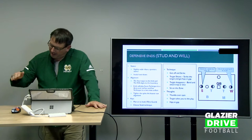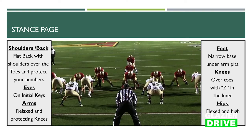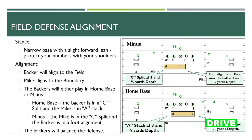With our defensive line, we want our tail higher than our head and we reach out with our hands — we have a whole defensive line segment that will cover this in detail. In our linebacker stance, we want our back flat, shoulders over our toes protecting our numbers, eyes on our initial key, arms relaxed protecting our knees, and a narrow base with our feet under our armpits. We want our knees, toes, and hips all in line with Z's in our knees, and we want high hips.